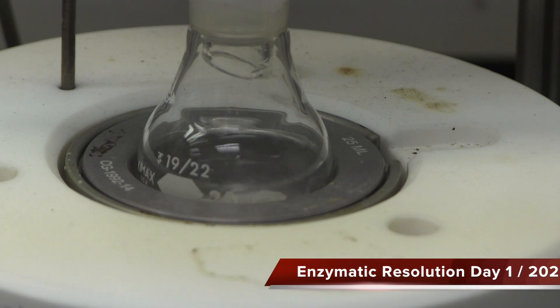In this lab, you will be separating enantiomers of a racemic alcohol mixture by using an enzyme and silica gel chromatography.